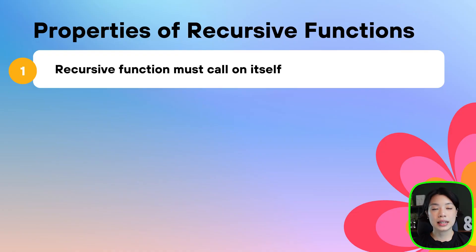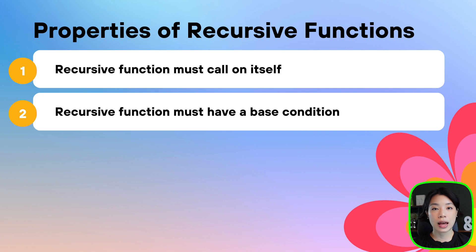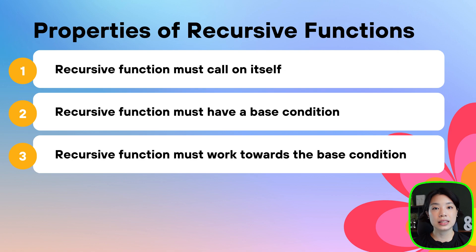You might notice that this feels like a loop — an infinite loop to be exact, because we're calling the same function inside itself over and over again, and you are exactly right. So the three main properties of a recursive function are: one, it needs to perform a recursive operation; two, it needs to have a base condition at which the recursive function will stop; and lastly, it needs to work towards that base condition to ensure that it will stop at some point.